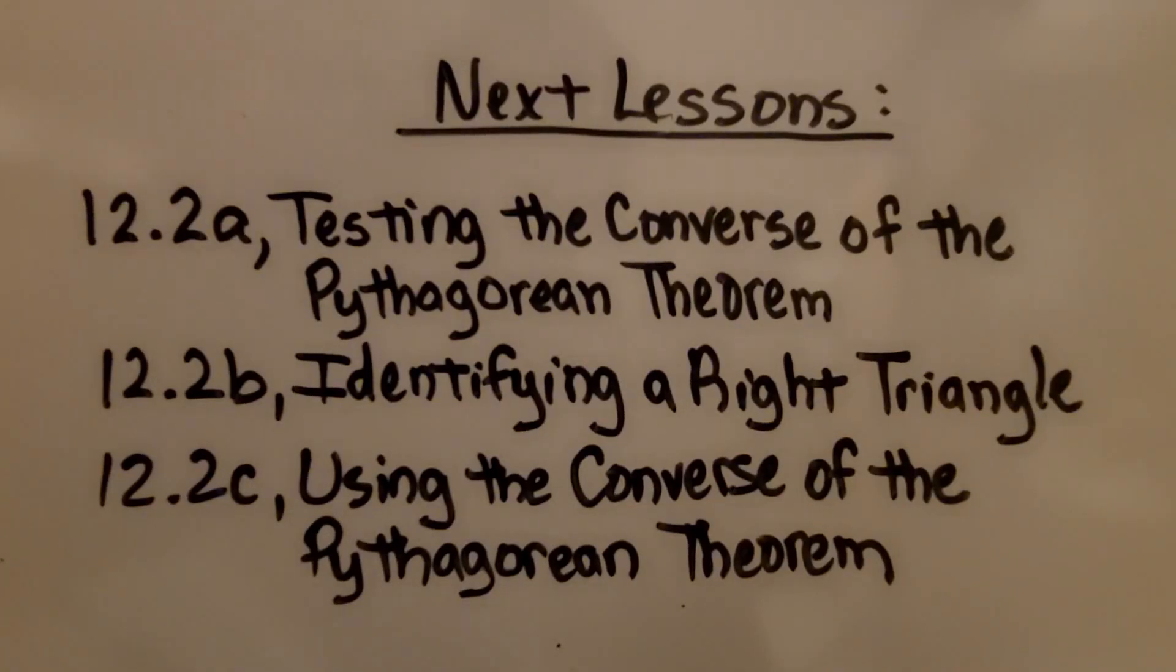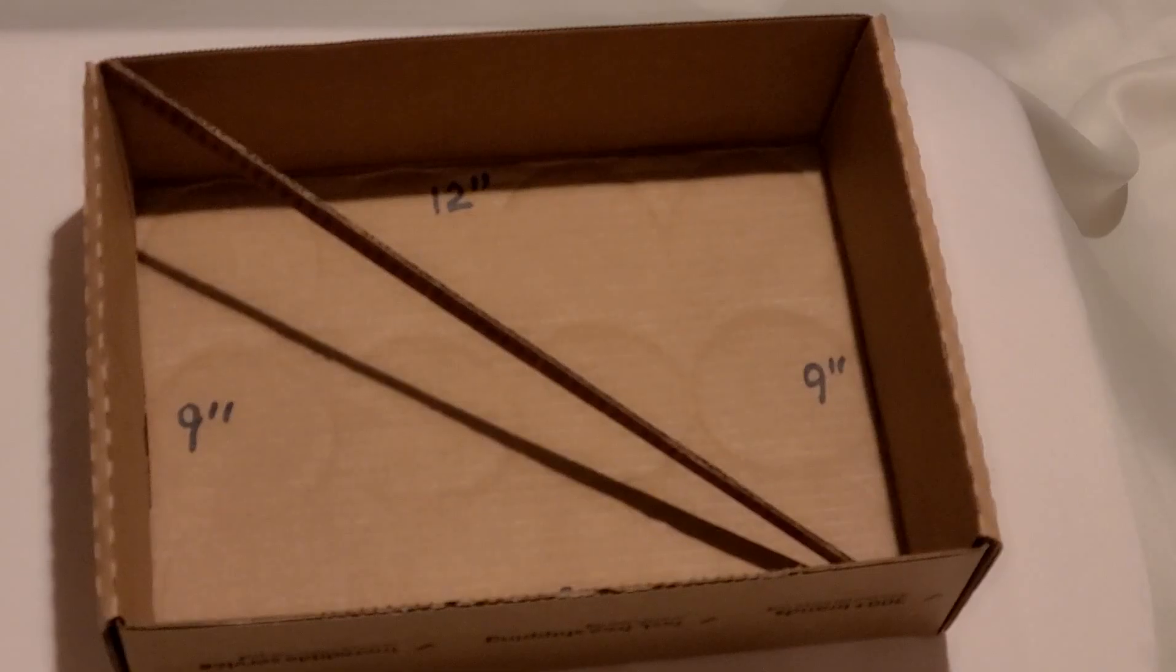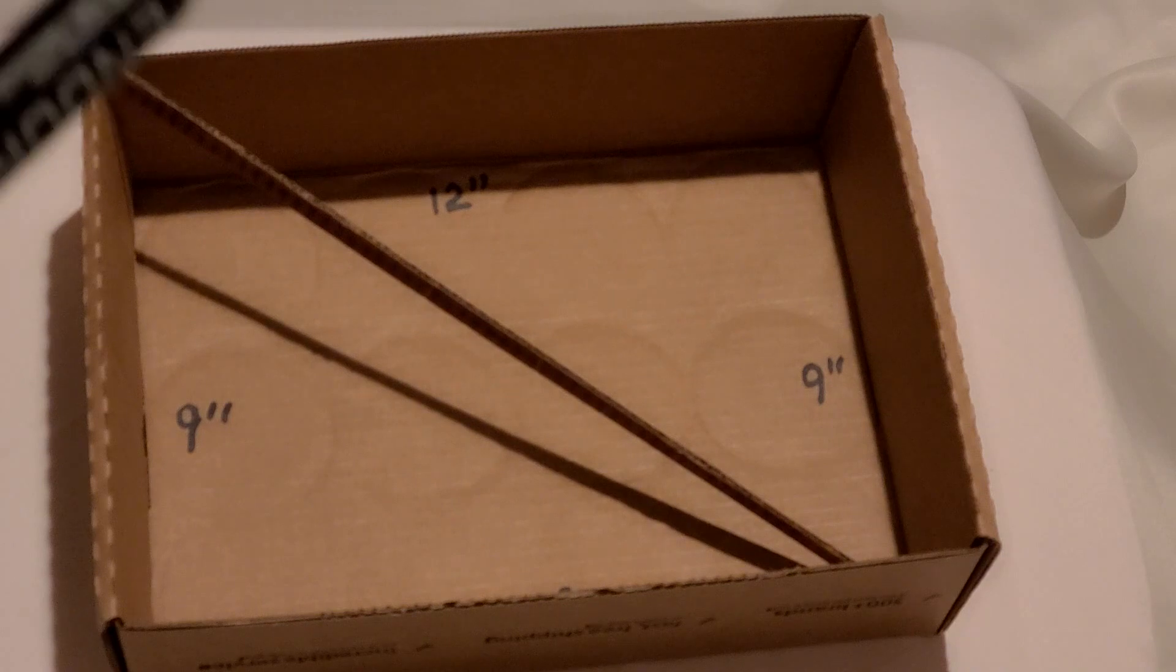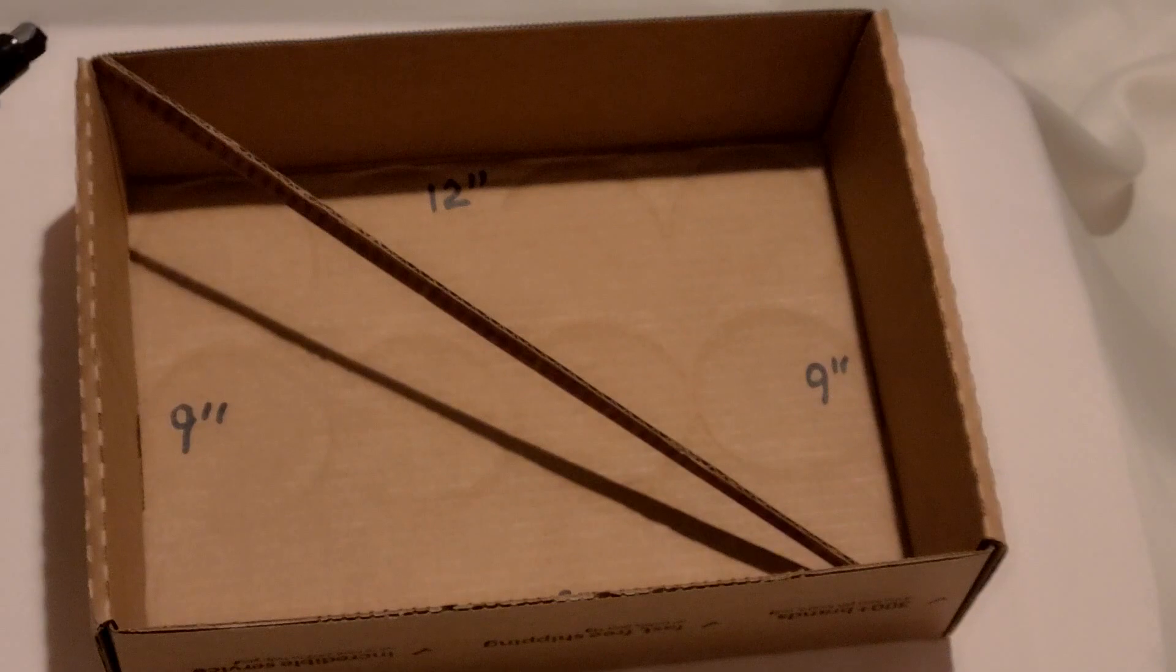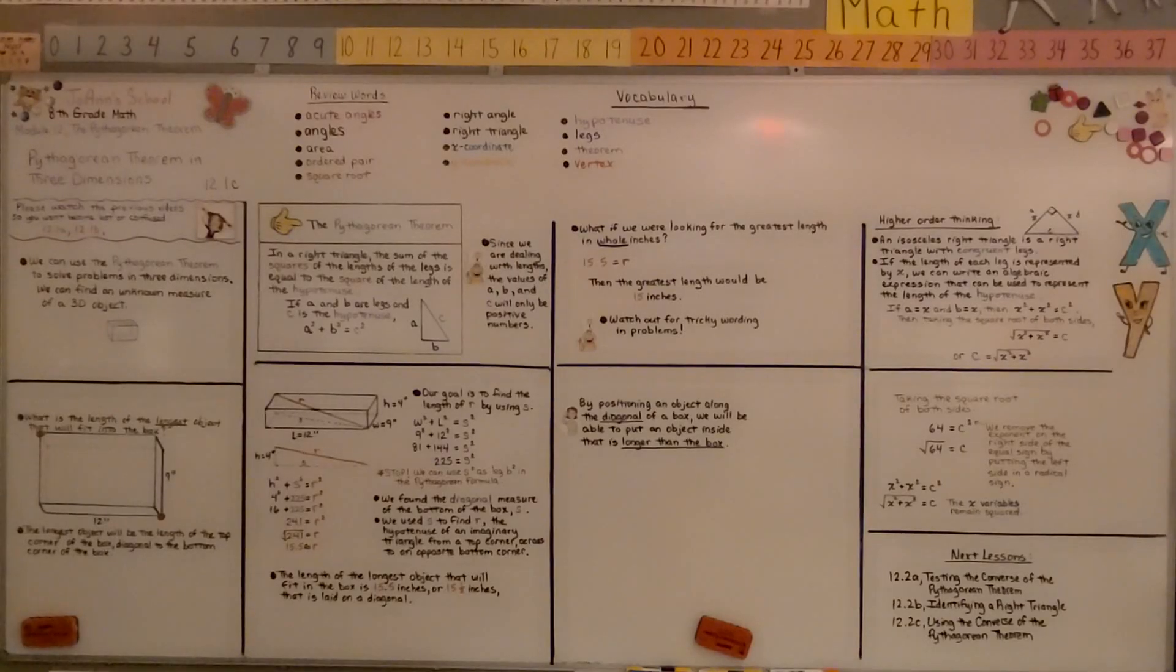We're finished with lesson 12.1 and we're moving on to 12.2. We're going to be testing the converse of the Pythagorean theorem. And remember, if you want to mail something long in a box, put it on a diagonal and it may fit into a smaller box. Have a wonderful day and join me for 12.2. Bye.